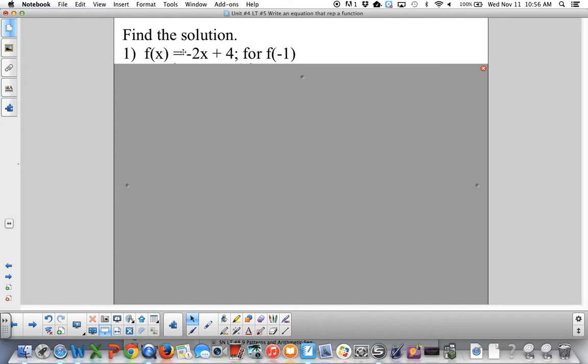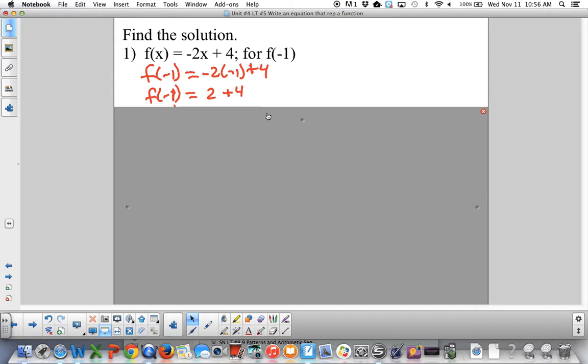So let's look at f of x is negative 2x plus 4. And let's solve this for when you're finding f of negative 1. So let x equal negative 1. So I plug negative 1 in for here and here. And I get f of negative 1 is negative 2 times negative 1 plus 4, which is positive 2 plus 4, which is 6. So my final statement is f of negative 1 gives me 6. And that's how you write it.